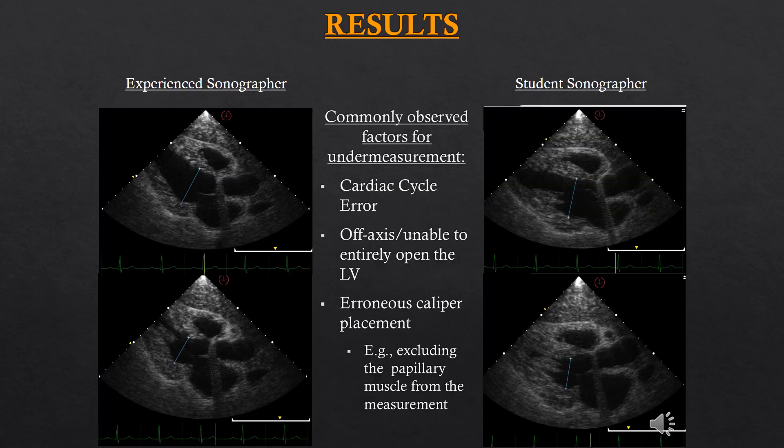After analyzing the data, I went through all the student images and measurements and noticed that the most common errors for under-measurement were either cardiac cycle error, being off-axis, or erroneously placing the caliper. On the left we have an experienced sonographer; on the right, an example of a student sonographer — notice how on the right side of the image there's papillary muscle, so they are not fully opening the LV, which is exacerbated in end-systole. In terms of cardiac cycle, they were not measuring at the widest dimension — either before or after the QRS. This is something I notice in sonography students: as soon as they see an image they perceive to be good, they freeze it, scared they'll lose it, and sometimes they do not look at the cardiac cycle.